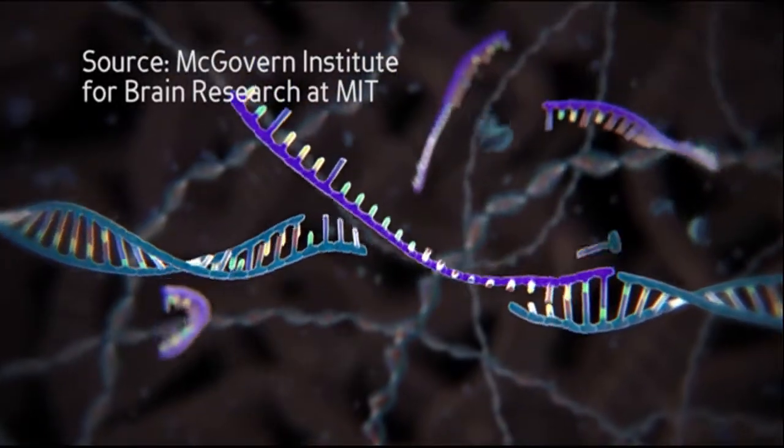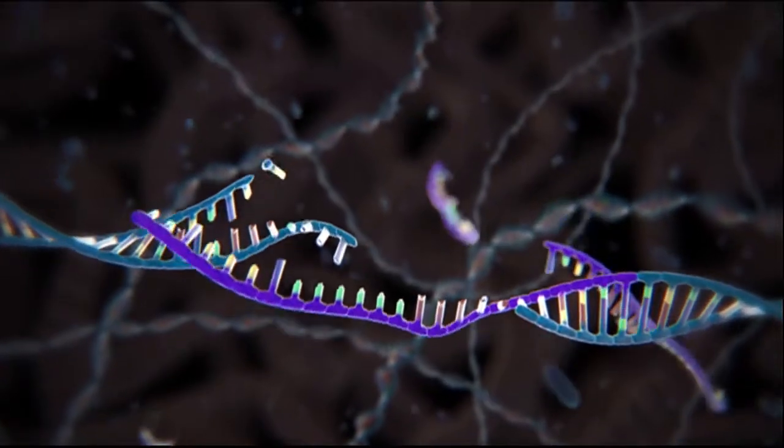All you have to do is give it this short little piece of DNA that acts like a molecular zip code to say, okay, go and cut here. CRISPR repairs the cut by inserting a new piece of DNA that alters the genetic code.